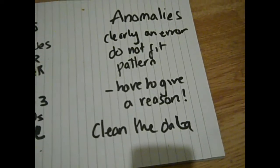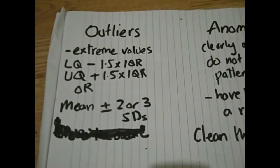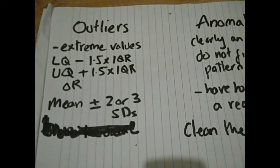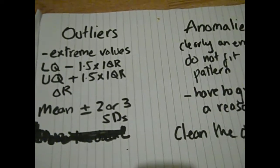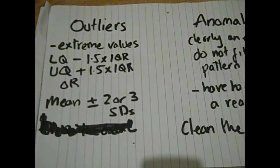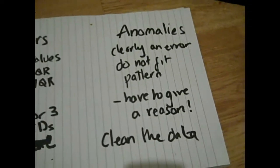So that's the difference between an outlier and an anomaly. An outlier is something that you calculate using whatever particular definition they give you. Generally in the exam they'll tell you what to do. If they don't, you can generally use the lower quartile, upper quartile, interquartile range method.